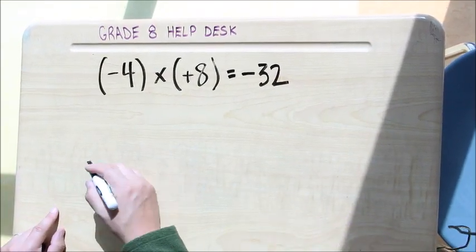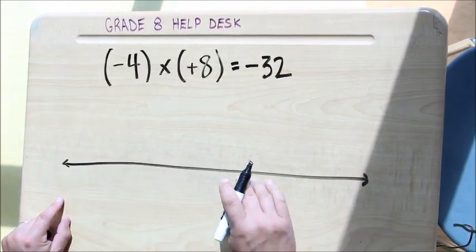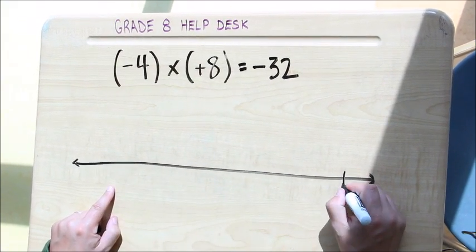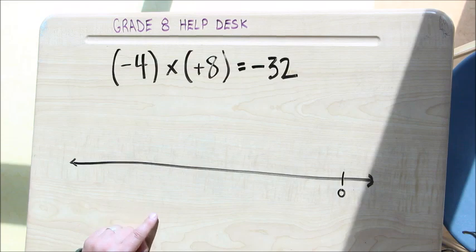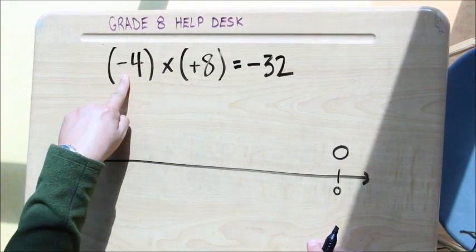Now I can do my picture. I'm going to draw my number line, and in this particular example I know that I'm going to end up in negative 32, so I'm going to be going this direction. So I'm going to put my zero down here, I'm going to draw my little person.